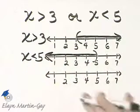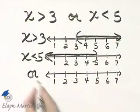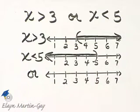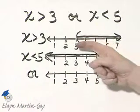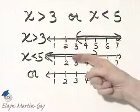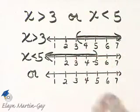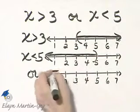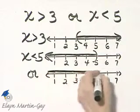Now, this is union, so I want to shade any number that's been shaded on this number line or on this number line. Can you see then that I would shade the entire number line?